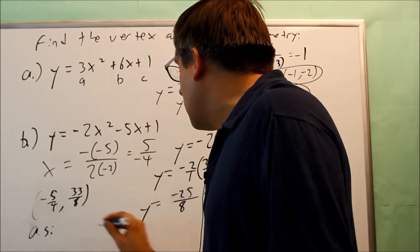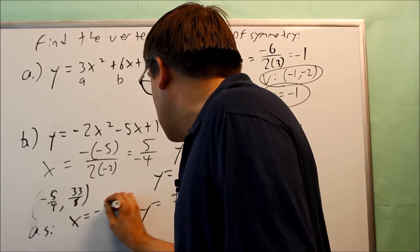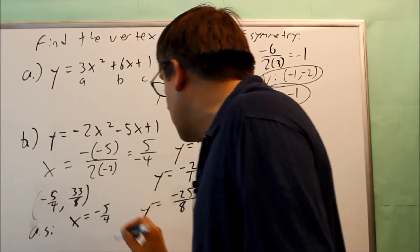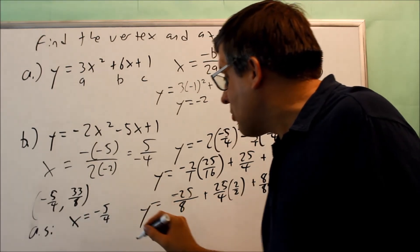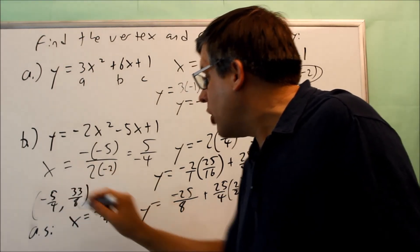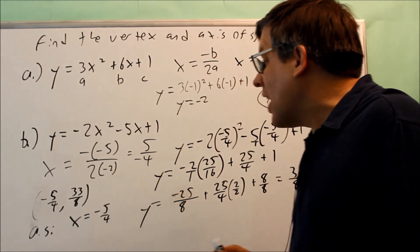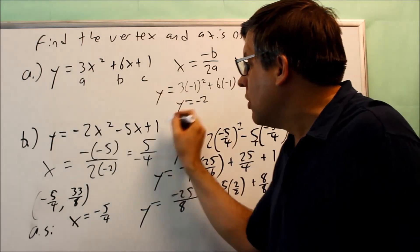To get that, you're going to do x equals, and it's going to equal the x-coordinate of your vertex. So it's going to be x equals negative 5 fourths. That's your axis of symmetry. And then here's the point. We have negative 5 fourths and 33 eighths. That would be the vertex for part b.